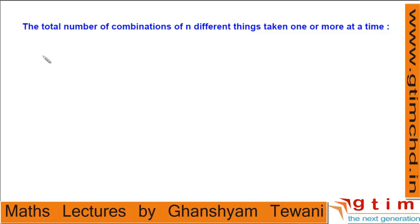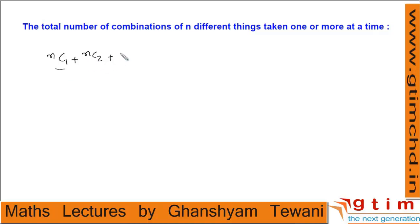If we want to select one object from n distinct objects, then the number of ways is nC1. If we want to select two objects, then number of ways is nC2. So the total count for selecting either one, two, three objects is nC1 + nC2 + nC3 + nC4 up to nCn when we select all the objects.